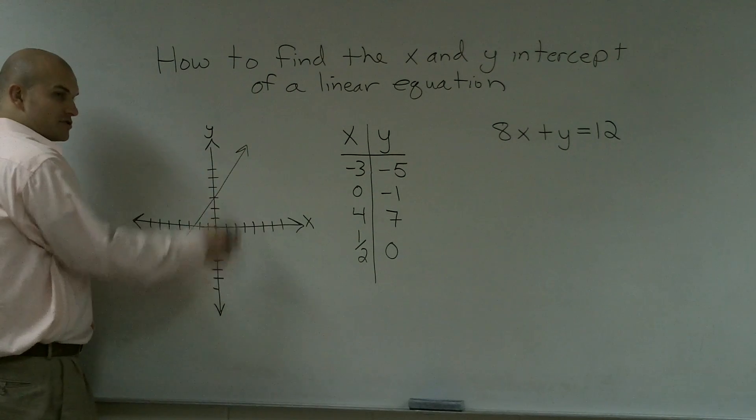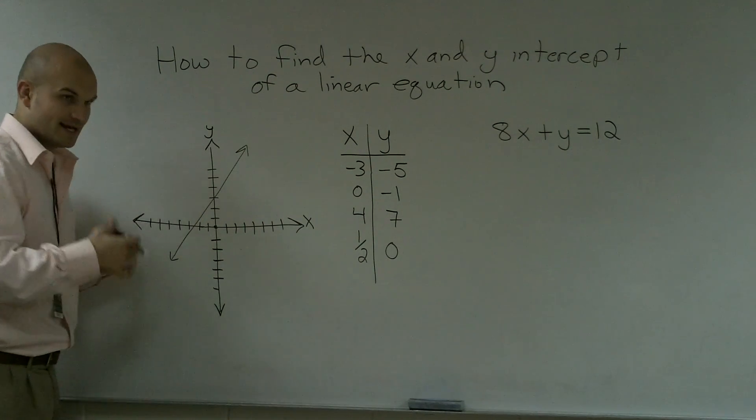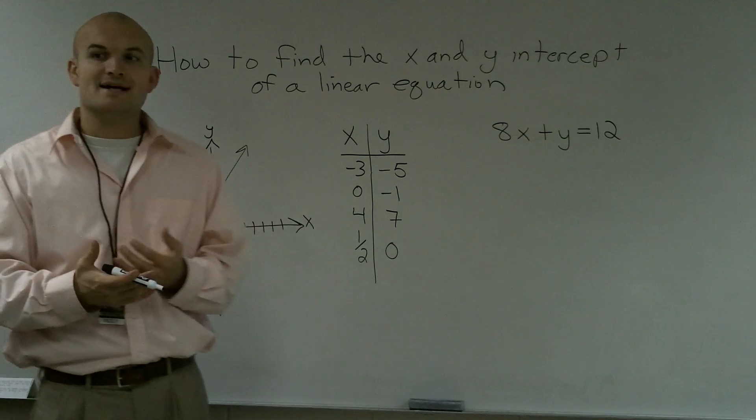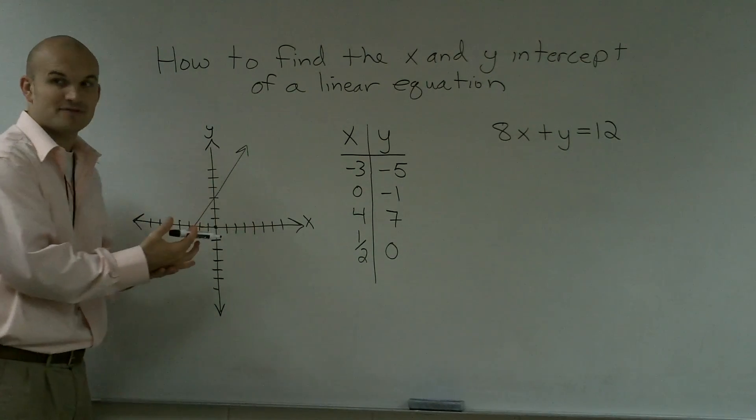You have your y axis, which goes up and down, and your x axis, which goes left and right. So when we're saying intercept, what we want to ask is, where is that line, where is our graph going to actually intercept the graph?